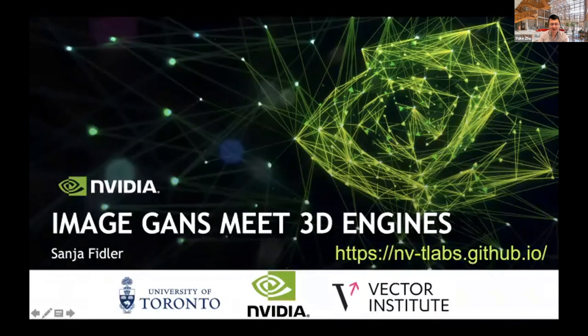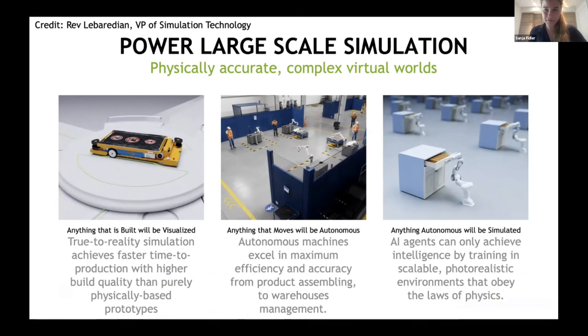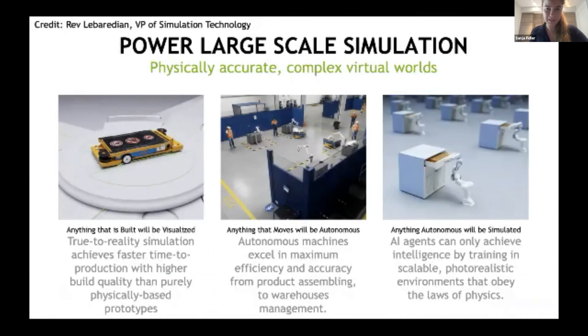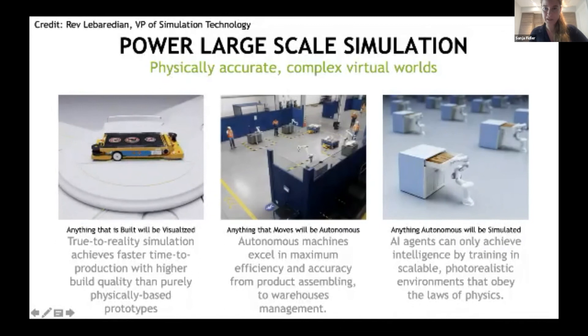Today I'm going to talk about image GANs and 3D engines, and how we can marry the two to get really good 3D representations. At NVIDIA, the vision for the future is in 3D: anything that is built will be visualized, anything that moves will sometimes be autonomous, and anything that is autonomous will be simulated. So there is a need for really large-scale simulation that is physically accurate and can model really complex virtual worlds.